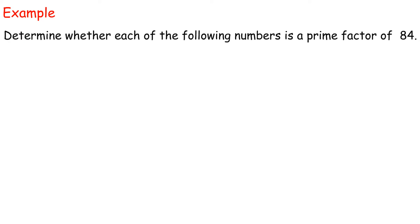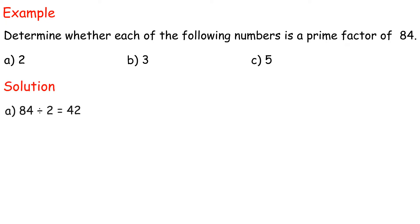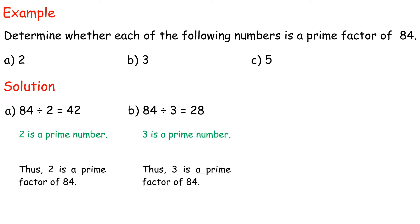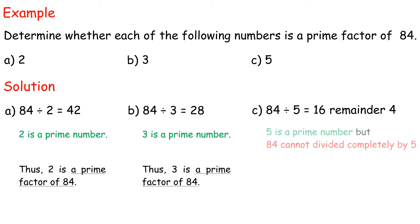Example: Determine whether each of the following numbers is a prime factor of 84: (a) 2, (b) 3, (c) 5. Solution: (a) 84 divided by 2 equals 42; 2 is a prime number. Thus, 2 is a prime factor of 84. (b) 84 divided by 3 equals 28; 3 is a prime number. Thus, 3 is a prime factor of 84. (c) 84 divided by 5 equals 16 remainder 4; 5 is a prime number, but 84 cannot be divided completely by 5. Thus, 5 is not a prime factor of 84.